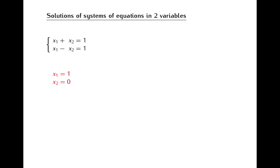So now we have x1 equal to 1 and x2 equal to 0. As you can check, these numbers satisfy both equations in our system, so they give us a solution. Actually, from the computations made here, you can see more — namely, that these two numbers give us the only possible solution of the system, because in the process of solving these equations, we were forced to make x1 equal to 1 and x2 equal to 0; we had no other options. So this system has exactly one solution.